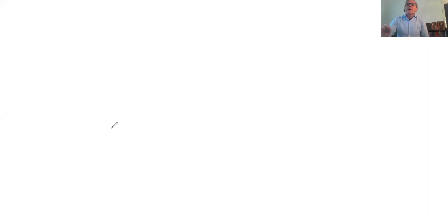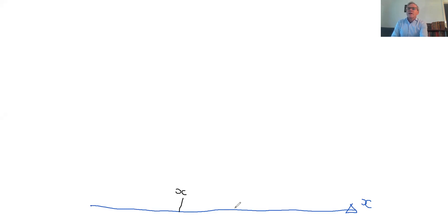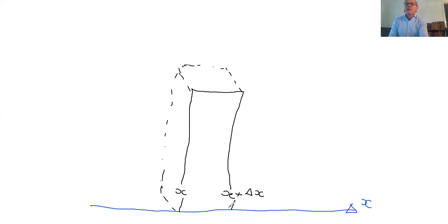The way I'm going to derive a conservation equation is to consider flow in one direction — that's going to be the x direction. I'm going to consider some location x and a location close by, x plus delta x, and we're going to take the limit that delta x goes to zero. What I'm going to do is draw a box — you can imagine this physically as a three-dimensional box. That's a piece of a porous medium.